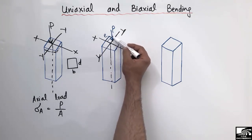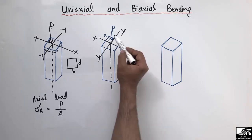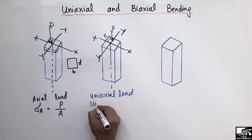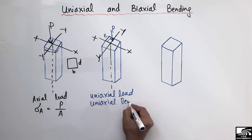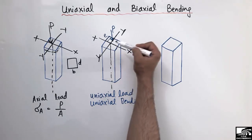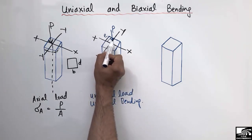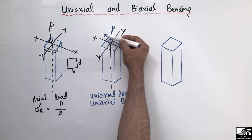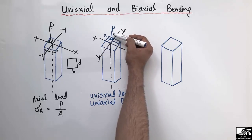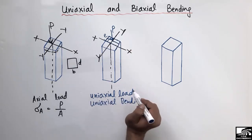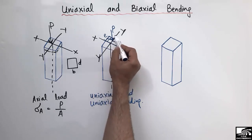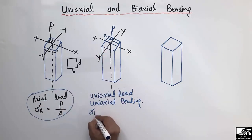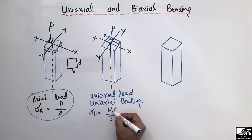This load will try to bend the column, so the bending created is called uniaxial bending. The load is at the center along the x-axis — at the same distance from both sides — but along the y-axis it is at a distance E from the center. For this type of loading, we cannot find the stresses using only the axial formula; we must use the bending stress equation: stress = Mc/I, where M is the bending moment, c is the distance from the neutral axis, and I is the moment of inertia.